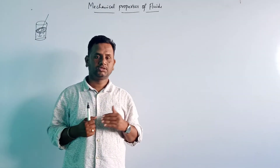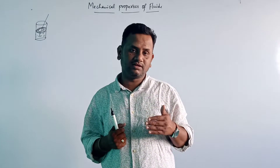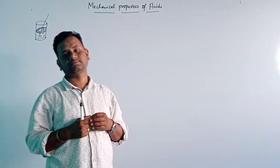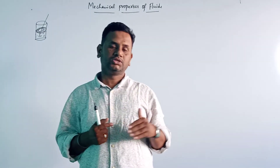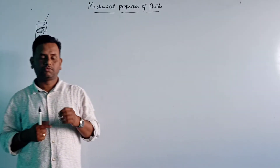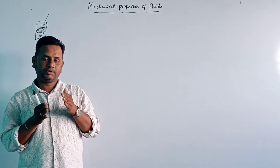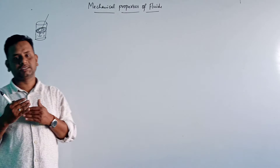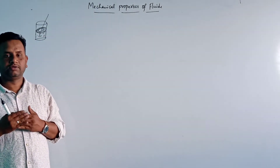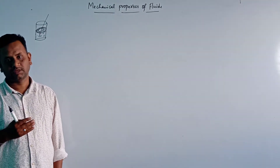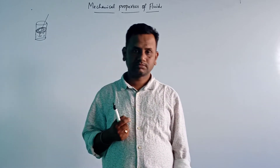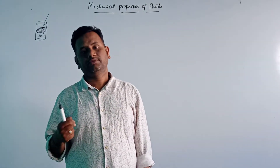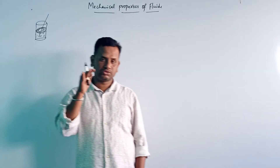The slower layers always try to decrease the velocity of the fast flowing layers. There will always be one force which opposes the motion — it is called an opposing force. We can call it a viscous drag, an opposing force which always causes the layers of the liquid to slow down.